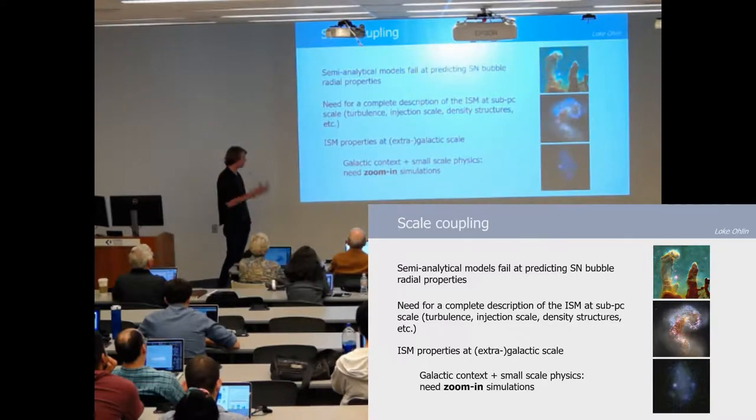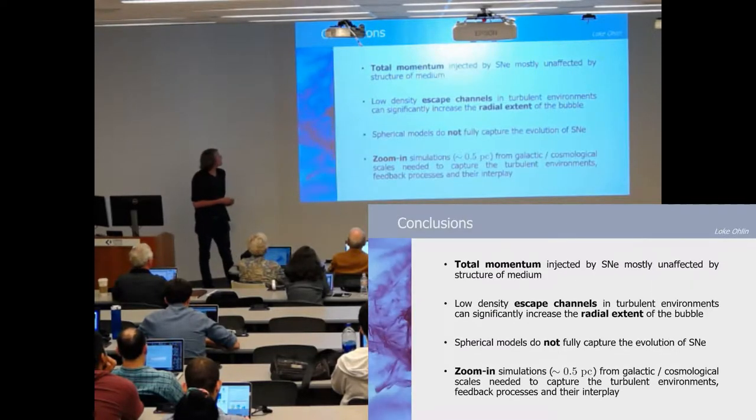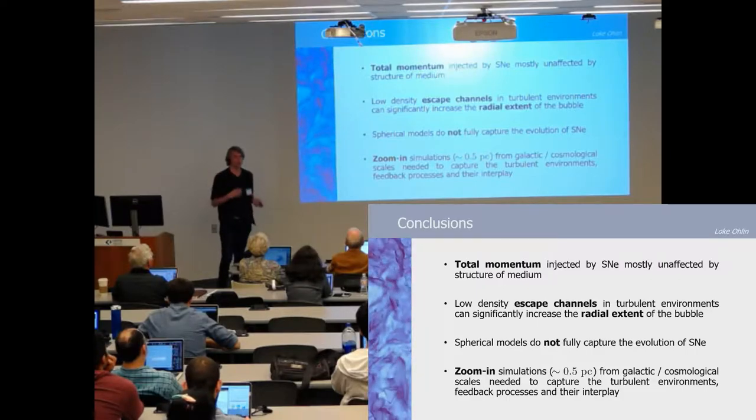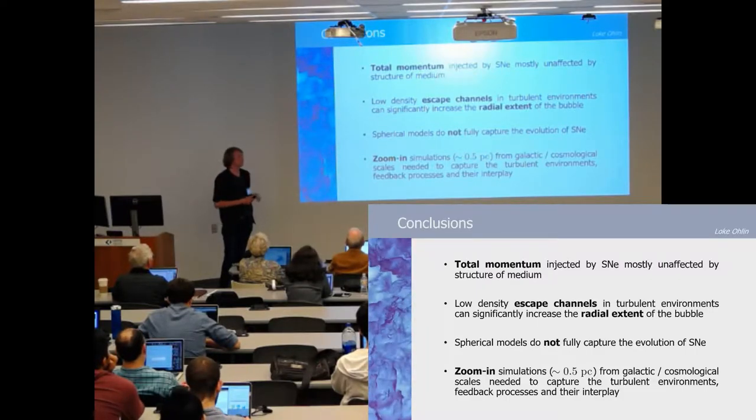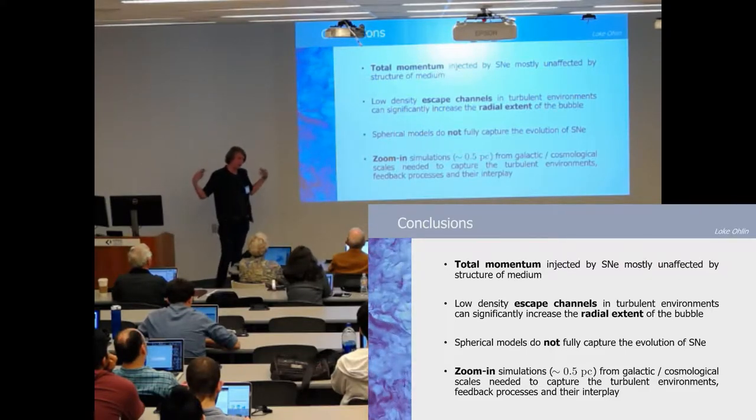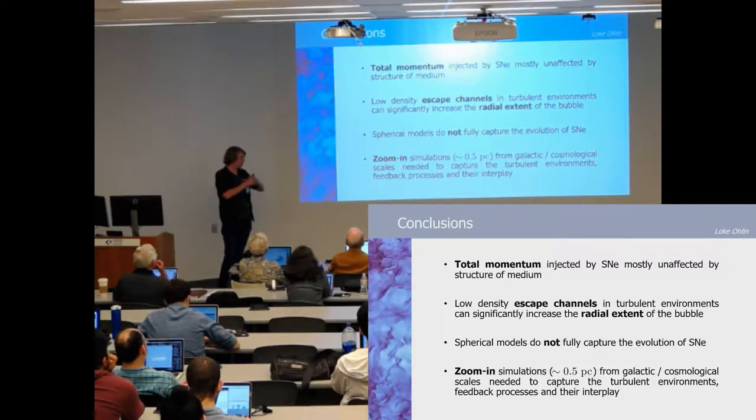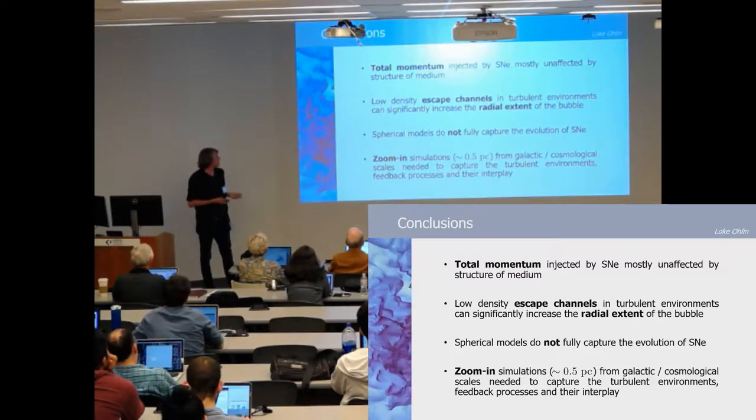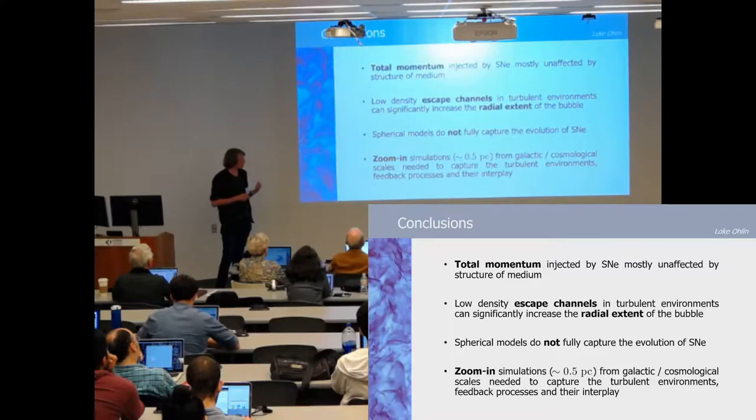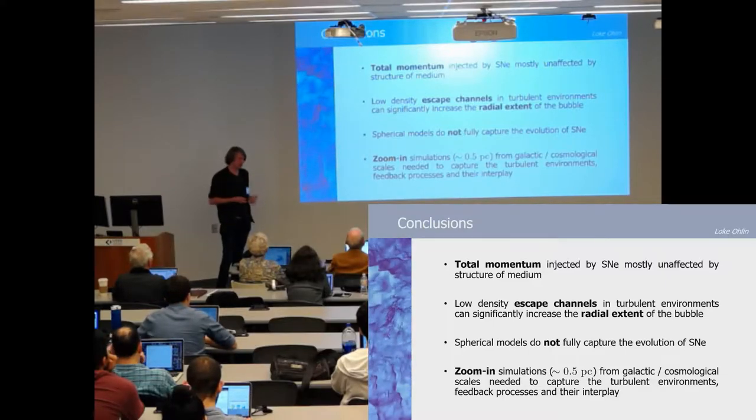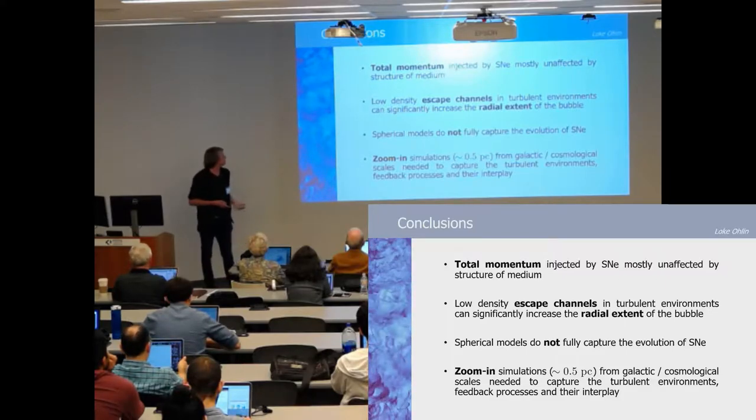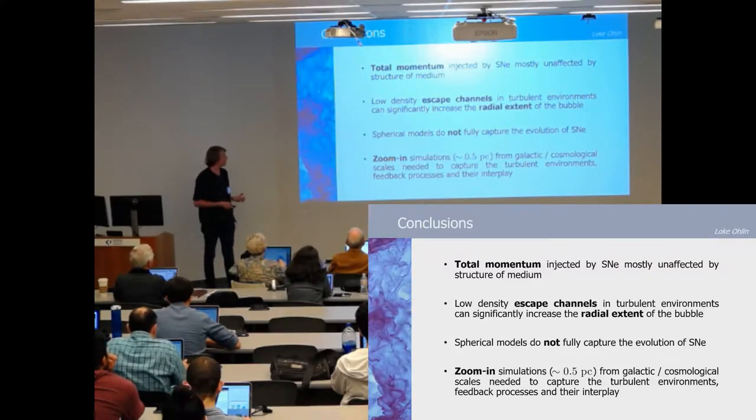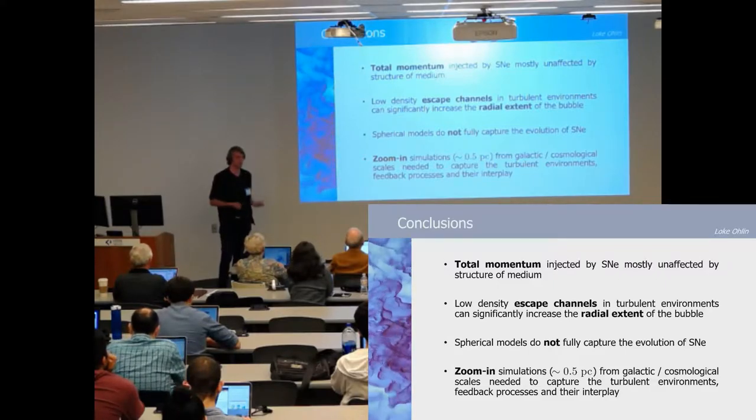So that was my talk. These are my conclusions. Total momentum injected by the supernova is not greatly affected by the structure of the medium. Low density escape channels in turbulent environments can significantly increase the radial extent of the bubble. Spherical models do not fully capture the evolution of SNe. Zoom-in simulations to roughly half a parsec from galactic or cosmological scales are needed to capture the turbulent environment, feedback processes, and their interplay. Thank you very much.